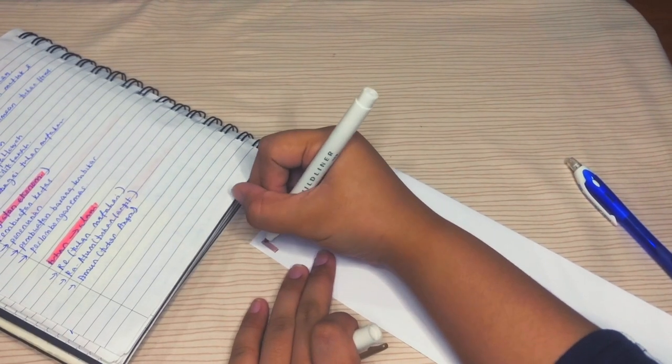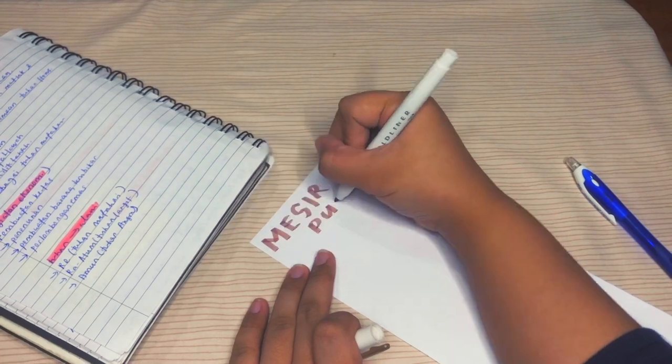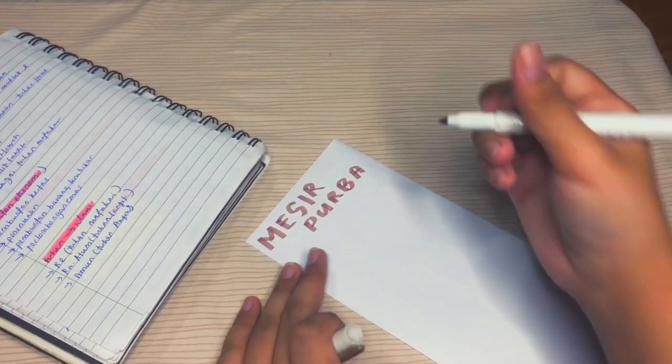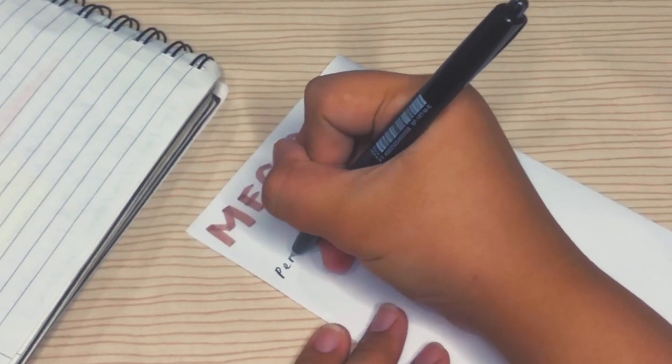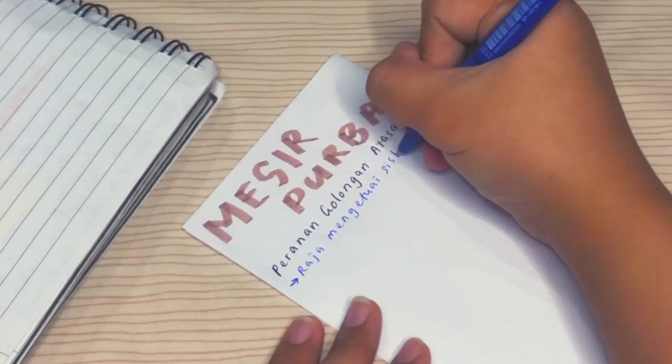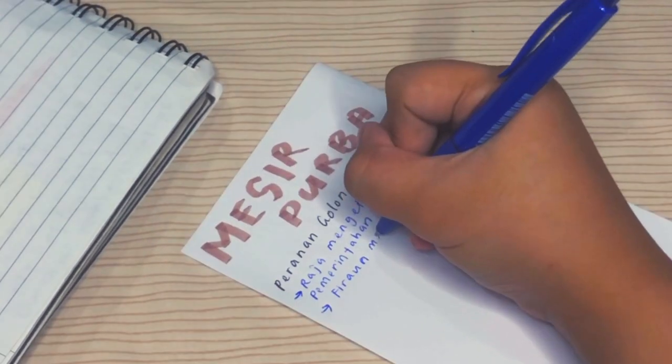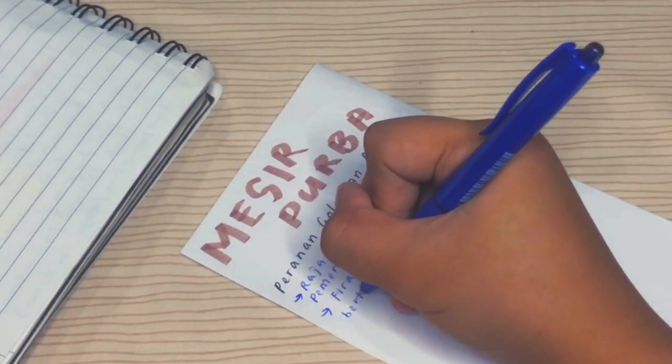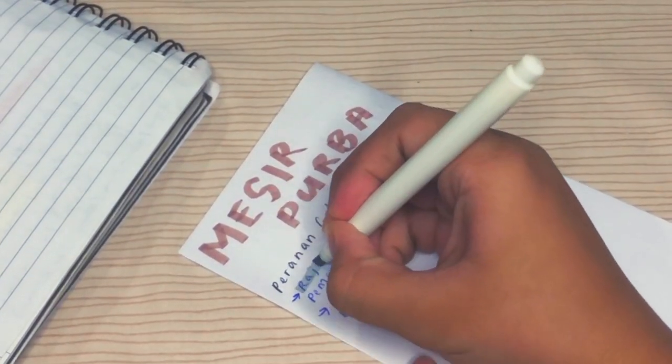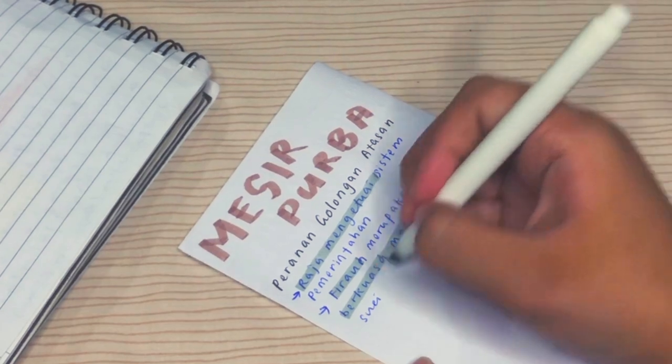Next, Sejarah. For Sejarah, it's similar, but I make it more specific, which is I don't follow the chapter but I follow the main point. Like now I'm doing Mesir Bertuah, so I write the role of different groups at the side. And for this part, I use the bullet point method. As I said just now, you guys can use bullet points or make complete sentences. And I just go ahead and highlight things which are important.